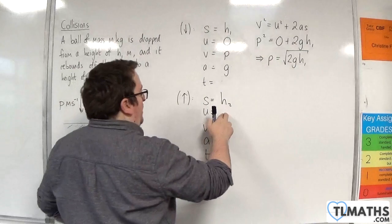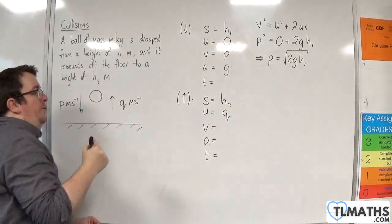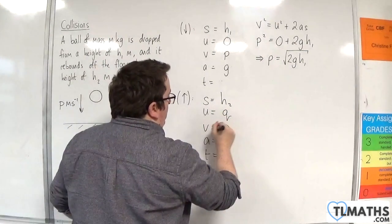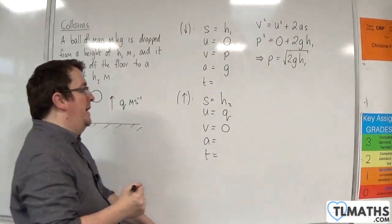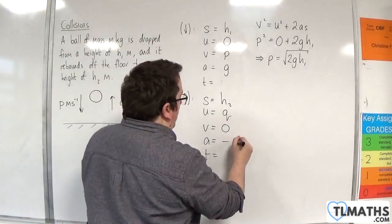The initial speed is what I want to find. So that's q. V will be zero when it hits its maximum height. And the acceleration due to gravity, because we're going upwards, will be minus g.